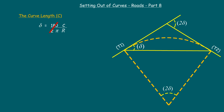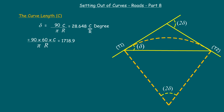The curve length C is given by pi into R into theta divided by 180. Rearranging, theta equals 180C divided by pi R, which equals 2 delta. So delta equals 90C divided by pi R, giving 28.648 into C divided by R in degrees. Since delta sometimes arrives in less than a degree, the formula in minutes is: delta equals 1718.9 into C divided by R.